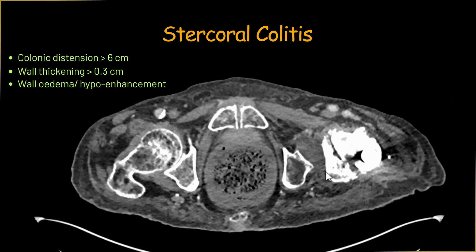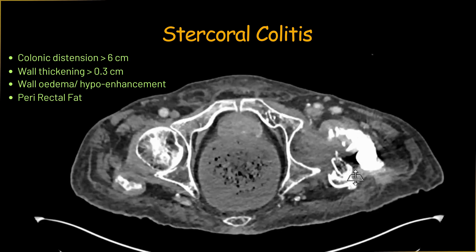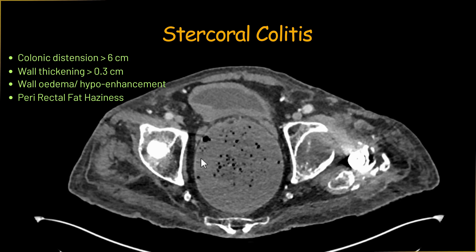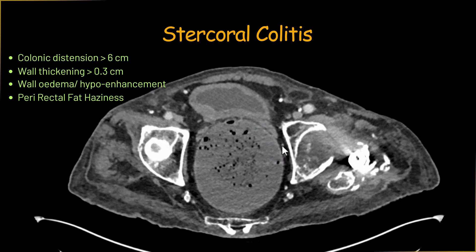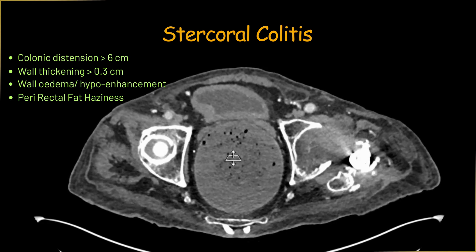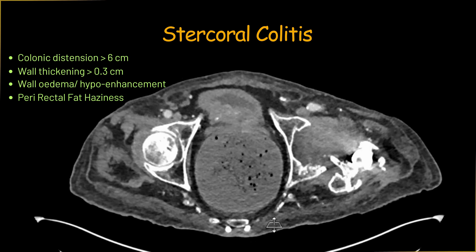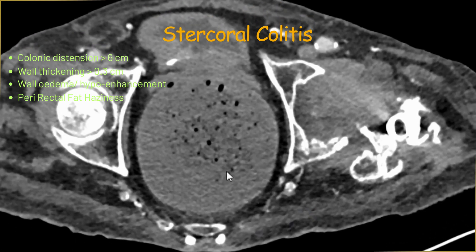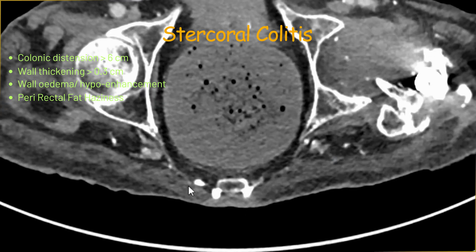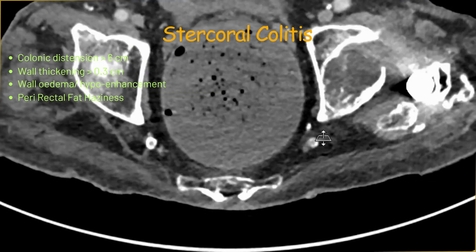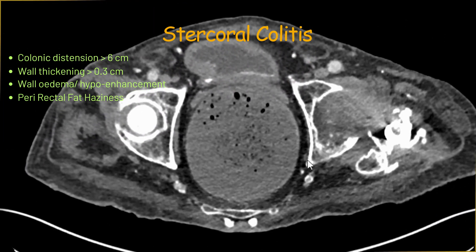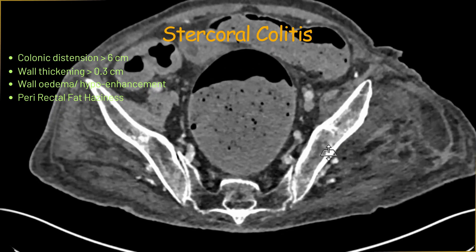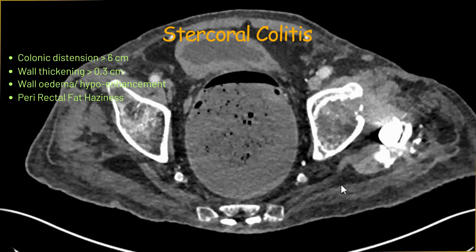We also need to look for fat haziness around the rectum itself. The rectum is so significantly distended that you don't see much of the mesorectum around it. But in the presacral area, do you see a bit of fat haziness and thickening? This suggests there is edema in the rectal wall due to significant compression by the impacted fecal matter. We have already excluded perforation.